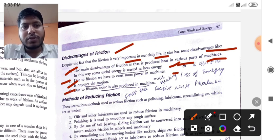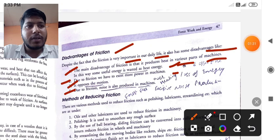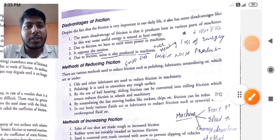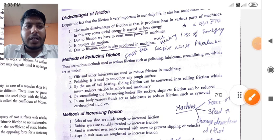The fourth one is, due to friction, noise is also produced in the machine. After that, some methods of reducing friction are given here.